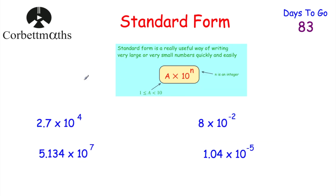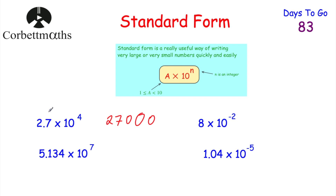Now let's look at writing numbers in Standard Form back as ordinary numbers. Starting with 2.7 × 10⁴: we move the digits 4 columns to the left — 27, 270, 2,700, 27,000. So 2.7 × 10⁴ = 27,000.